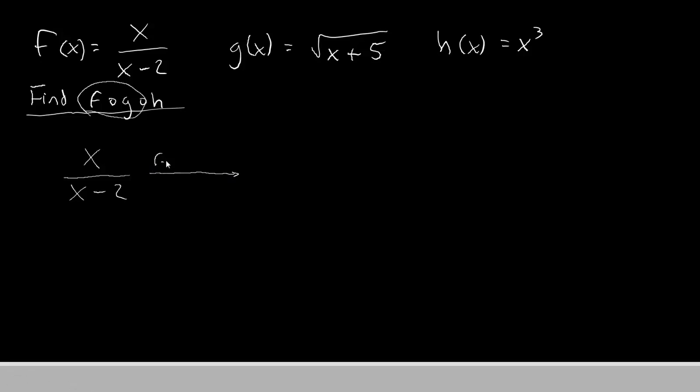Now we replace the x with g. So our function becomes g over g minus 2.